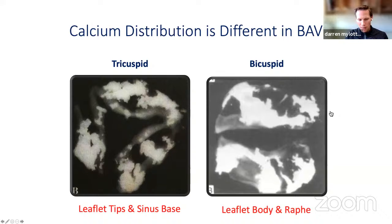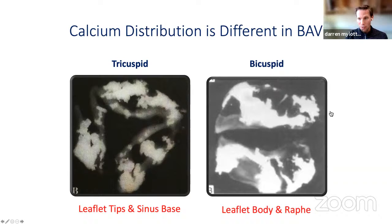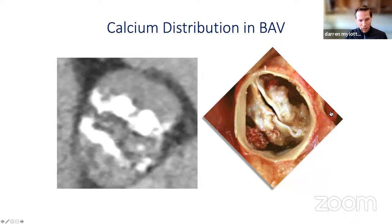In tricuspid aortic valve, calcification is at the leaflet tips and the bases of the sinus. The leaflet tip is not an issue because it folds back into the sinuses, and at the base that's where we size and anchor — so our valve designs are prepared for that. On the other hand, in bicuspid morphology the dense calcification is found not at tips or bases, but right in the body of the leaflet — on average about six to eight millimeters above the level of the annulus — and our devices are not specifically designed for this calcification.